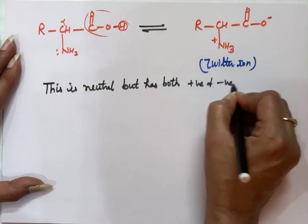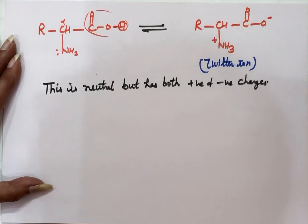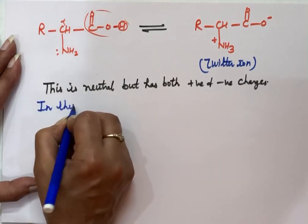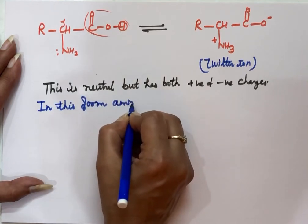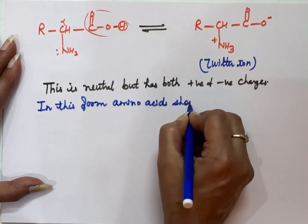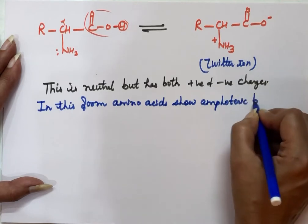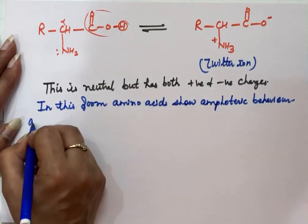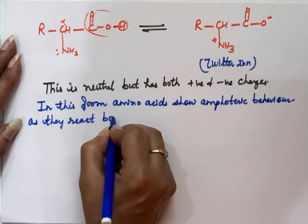In this zwitterion form, amino acids show amphoteric behavior — that means they can react both with an acid as well as with a base.